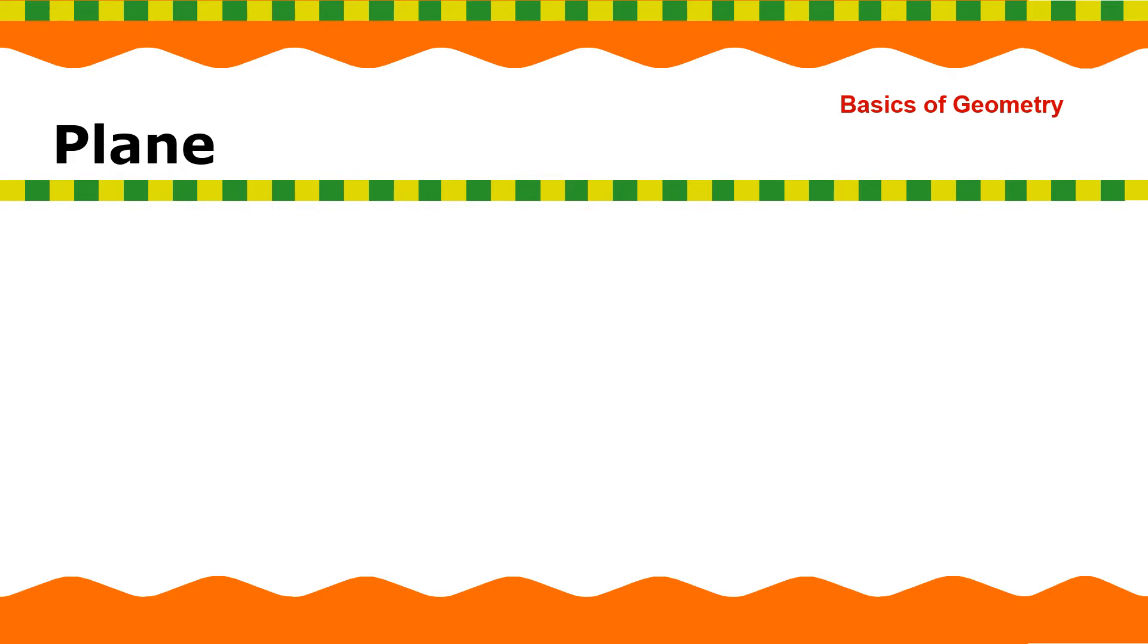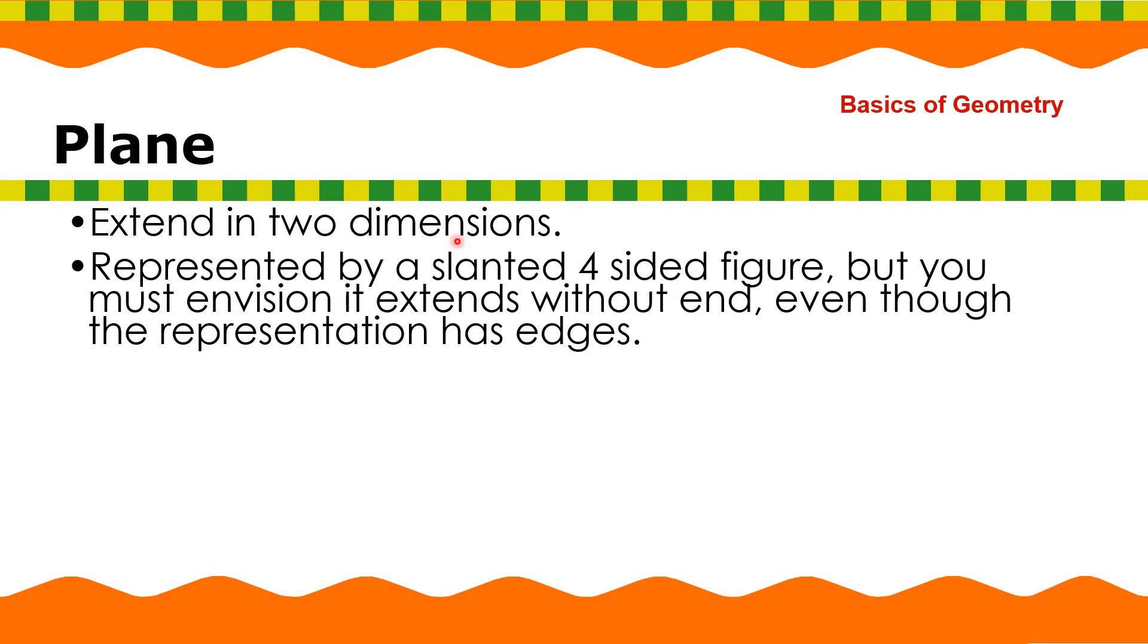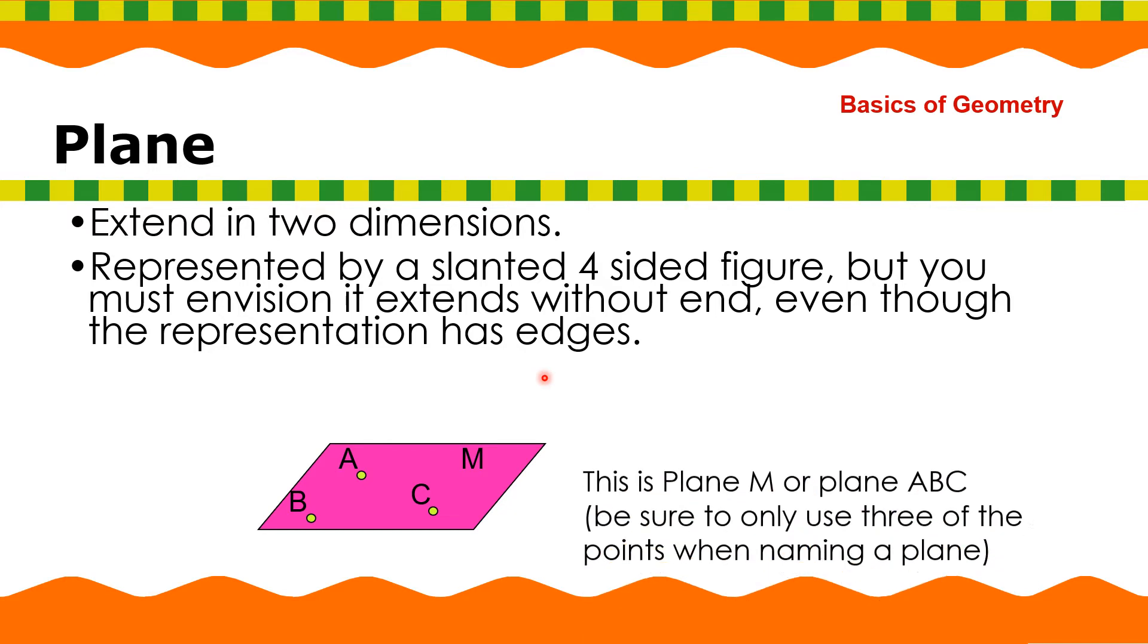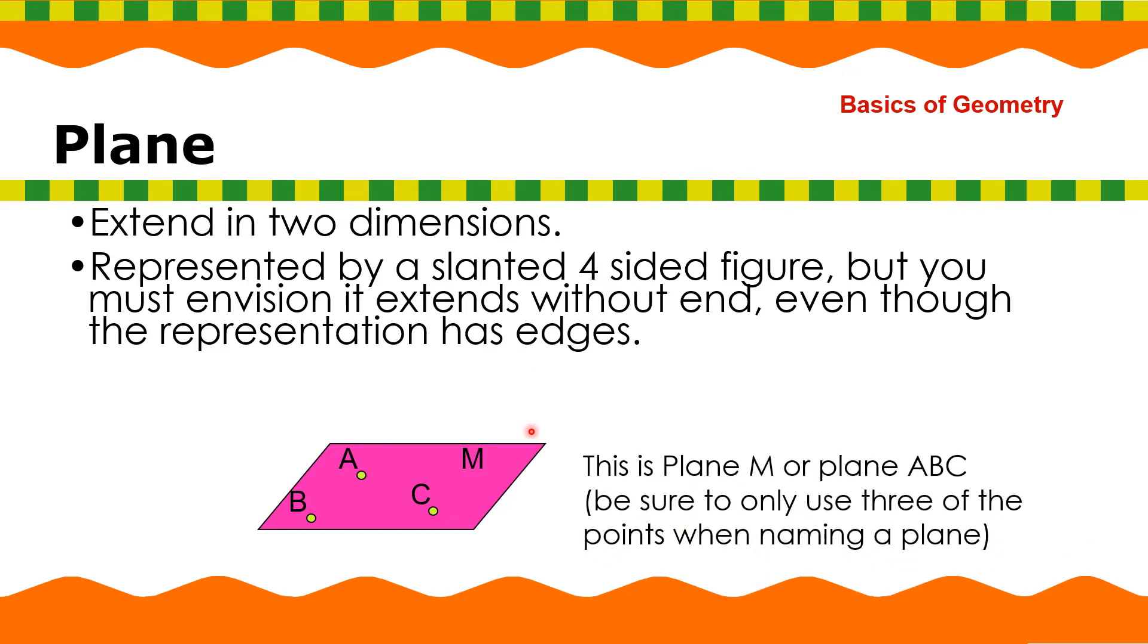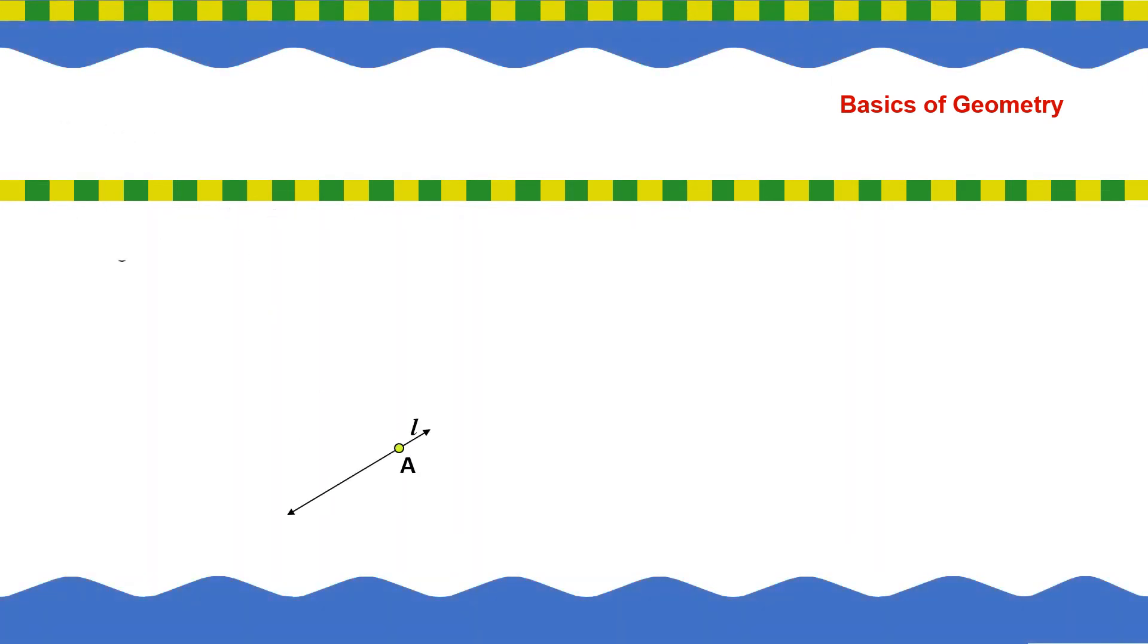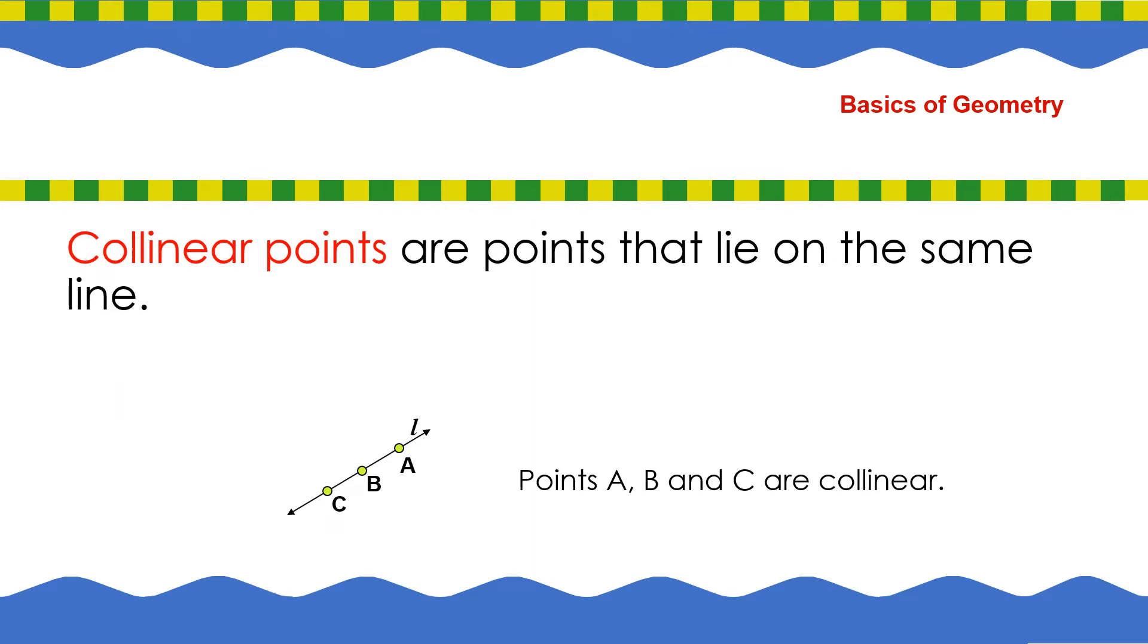Plane. And what is a plane? Hindi po yan airplane. It extends in two dimensions represented by a slanted four-sided figure but you must envision it extends without end even though the representation has edges. This is plane M or plane A, B, C. So, be sure to only use three of the points when naming a plane. So, the three letters.